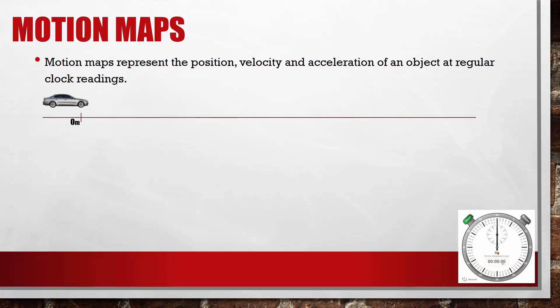Here we have a car. In a moment, it is going to move to the right across the screen at a constant speed. As it moves, we are going to record its position each second by placing a dot at the location of the front tire.